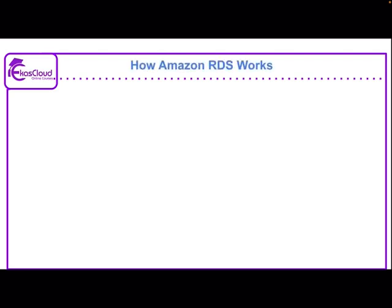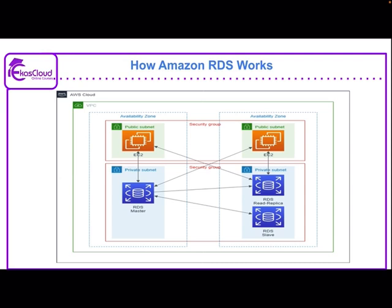Now we will see how Amazon RDS works. This is how the architecture looks like. In AWS Cloud, we should have a VPC — that is, a Virtual Private Cloud. Inside that we will have a region, and inside the region we will see the availability zones. In the availability zones, we will have a public subnet and a private subnet. The public subnet holds the web server, which we consider as an EC2 instance. The private subnet holds the database server. It should not be directly reachable through the internet, which is why the database server is kept inside the private subnet. The routing of the public subnet, internet access, backups, read replicas, and RDS — all of these process flows happen with the help of the security group.